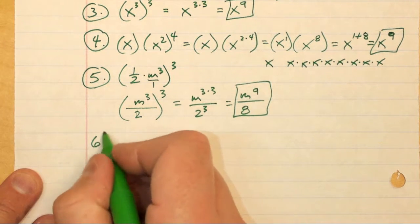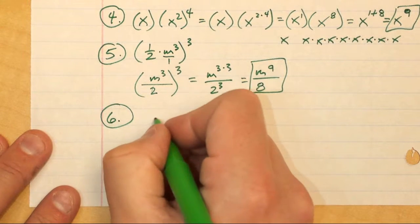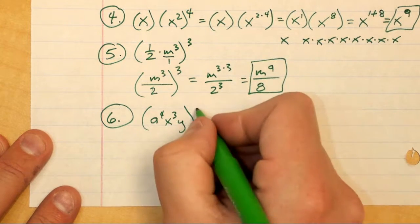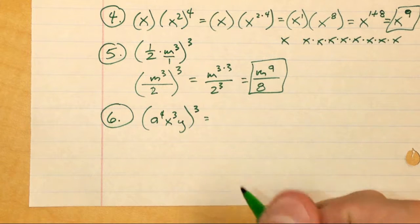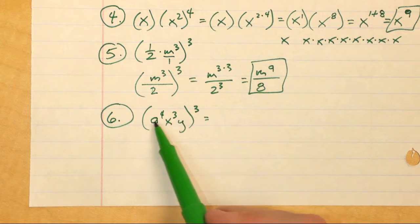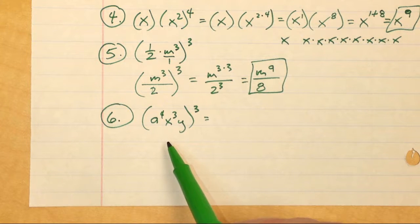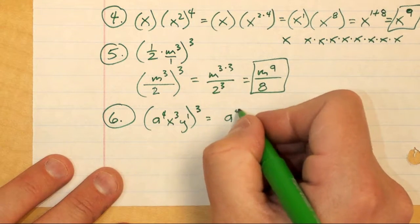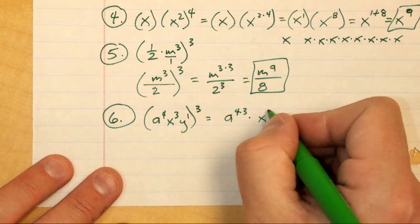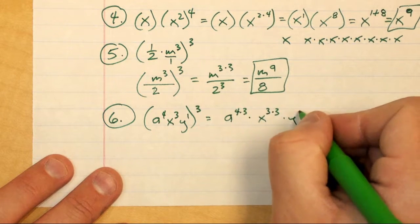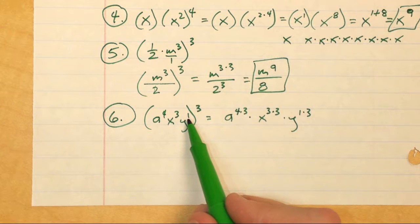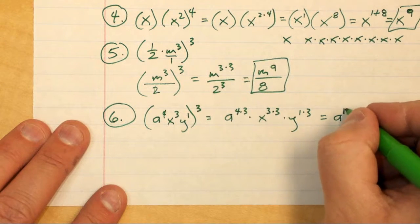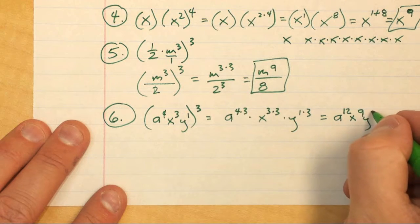Number six: I have a to the fourth power times x to the third power times y, all of that raised to a power of three. I can't simplify anything in the parentheses since all have different bases, so I apply the power-to-power rule. Keep in mind y has an imaginary one next to it. So this becomes a to the four-times-three, times x to the three-times-three, times y to the one-times-three, which reduces down to a to the twelfth, x to the ninth, and y to the third.